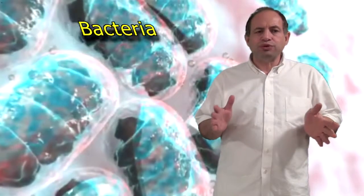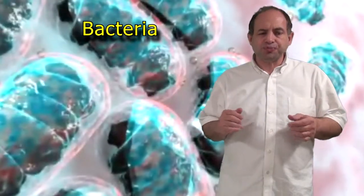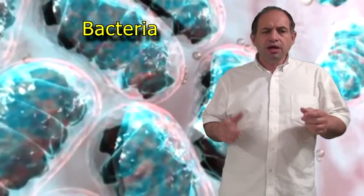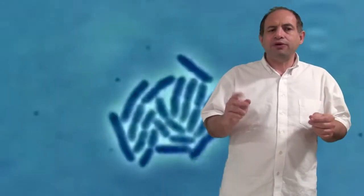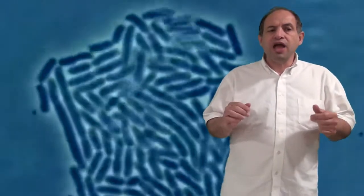Some bacteria can reproduce every 20 minutes. Bacteria like that can grow from one cell to eight in an hour, 512 in three hours, and 4.4 trillion in 14 hours.